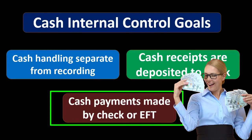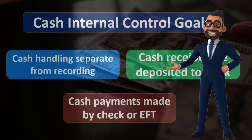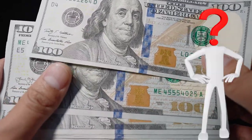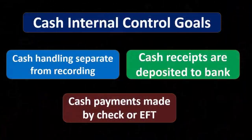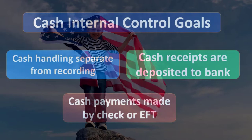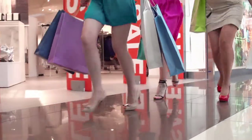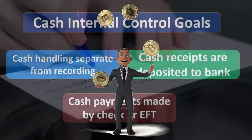Cash payments should be made by check or electronic funds transfer. We don't want to make business payments with physical cash because there's no audit trail. Some people think cash payments are advantageous because no one can track them, but from a record-keeping standpoint we want a good audit trail so we can look back and see what we spent money on. With checks, we can go back to the bank statement and see exactly who a check was written to.